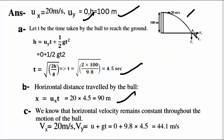For part C, horizontal velocity vx remains constant throughout the motion at 20 m/s. For vertical velocity, using v = u + gt: vy = 0 + 9.8 × 4.5 = 44.1 m/s. So the vertical speed at the time of striking the ground is 44.1 m/s.